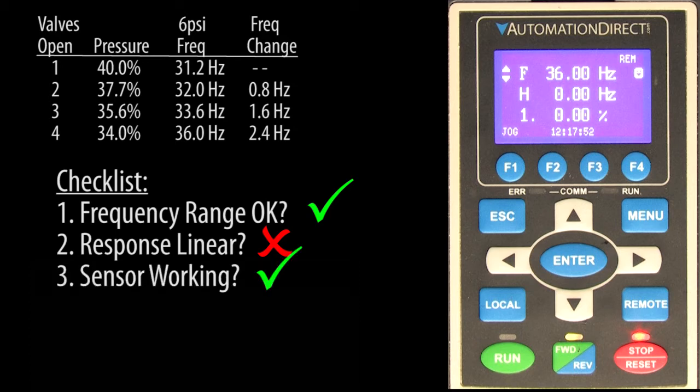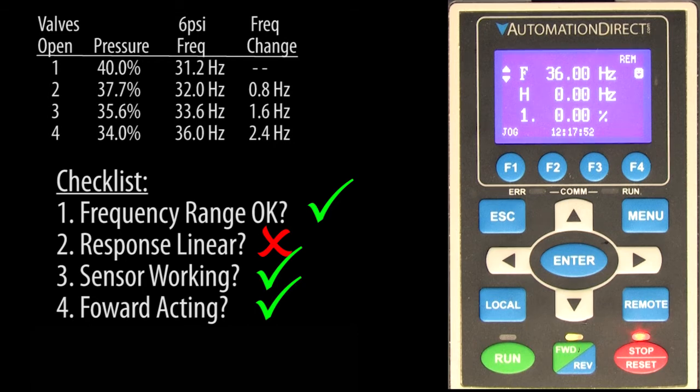We know our sensor is working and that when the motor speeds up, the sensor value goes up. We call that a forward acting system. A reverse acting system would be something like a cooling system where increasing the motor speed reduces the temperature sensor's output.